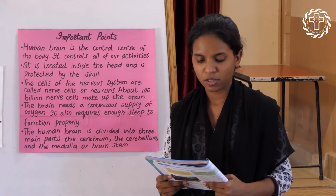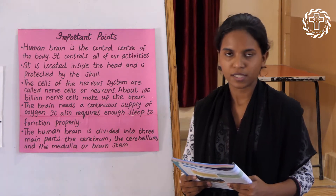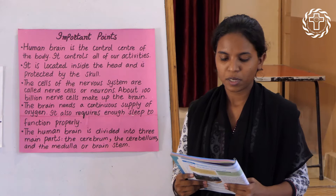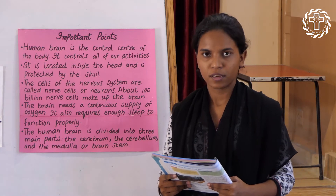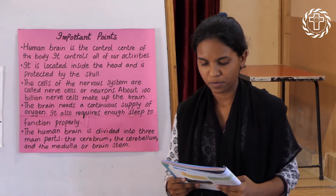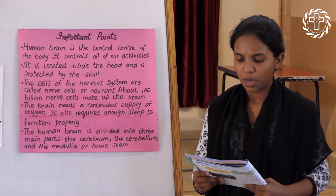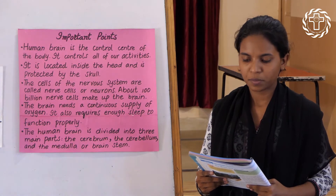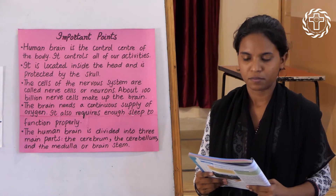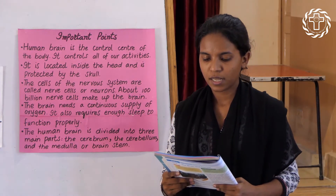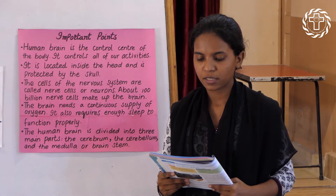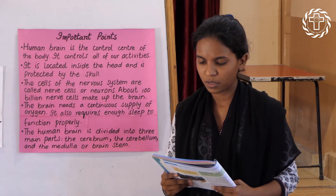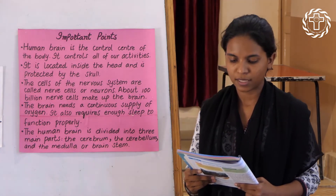The cells of the nervous system are called nerve cells or neurons. About one hundred billion nerve cells make up the brain. All the nerve cells are linked together to control all of the body's activities. 'Linked' means connect or join.